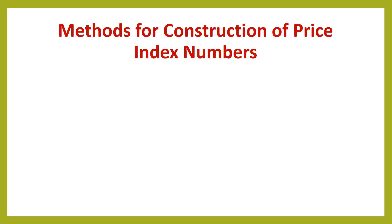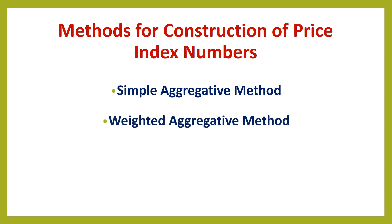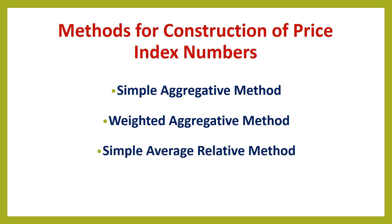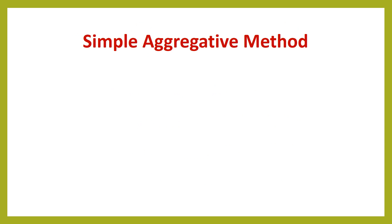The methods for construction of price index numbers are: simple aggregative method, weighted aggregative method, simple average of relatives method, and weighted average of price relatives method. In this video, we are going to discuss only the unweighted methods in the construction of price index numbers.